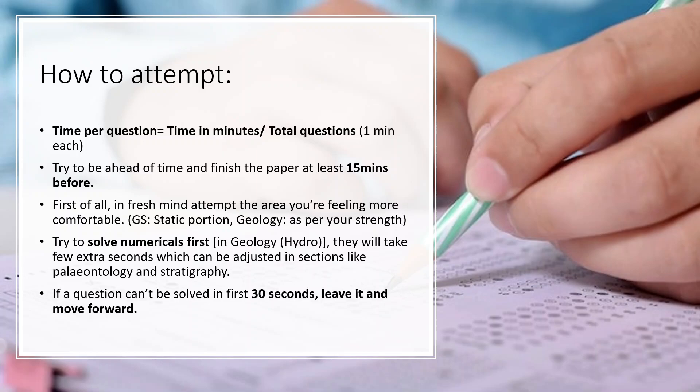In General Studies, attempt static subjects like Science, Polity, and History first, as there are very few chances of surprise questions — if you know it, you get it right; if you don't, leave it and move forward. Similarly, attempt the geology paper as per your strength areas. Once done with that, especially for the geology paper, try to solve the numerical answer-type questions next, because with the initial traction of correctly answered questions you should be feeling comfortable and confident, and those feelings should be leveraged so that chances of miscalculation are minimized.